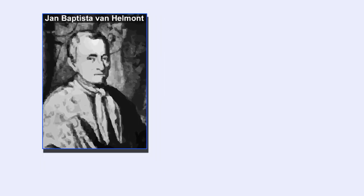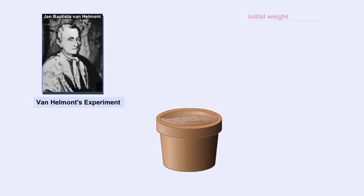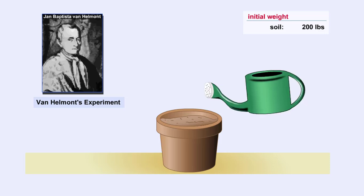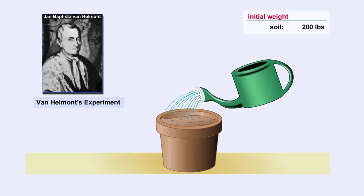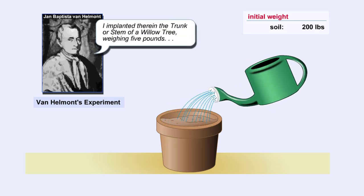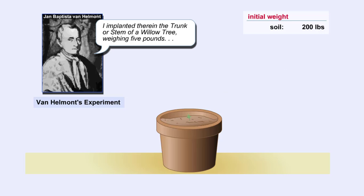In the 17th century, Jan Baptiste van Helmont, a Belgian physician and scientist, constructed an experiment to test how plants feed. This is how he described his experiment: "I took an earthen vessel, in which I put 200 pounds of earth that had been dried in a furnace, which I moistened with rainwater, and I implanted therein the trunk or stem of a willow tree, weighing five pounds."